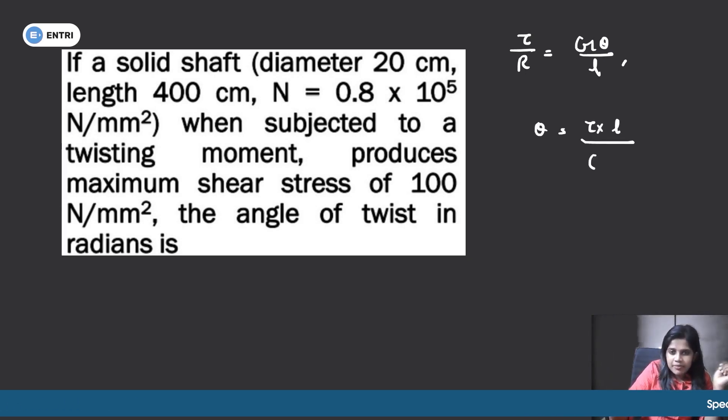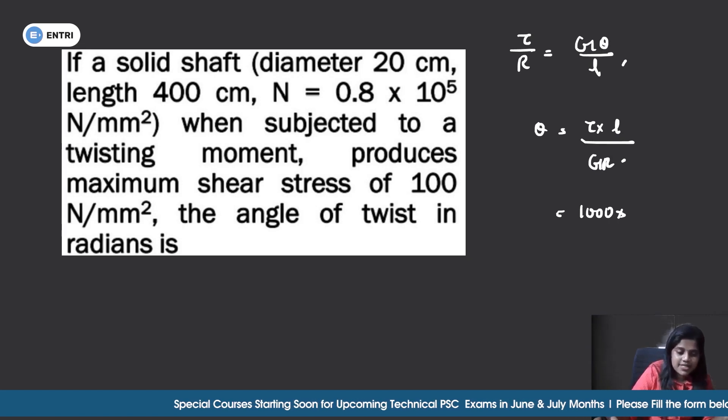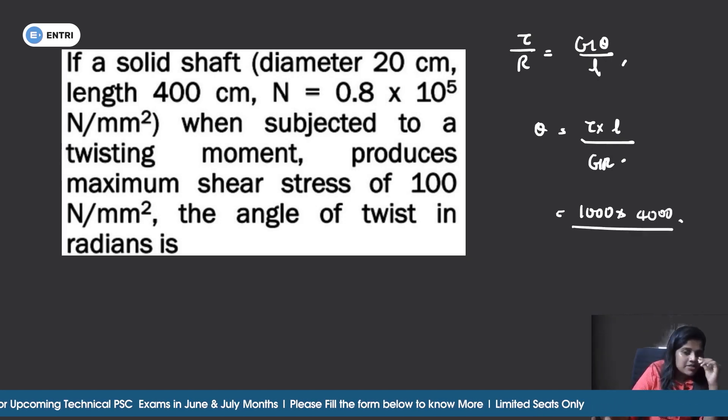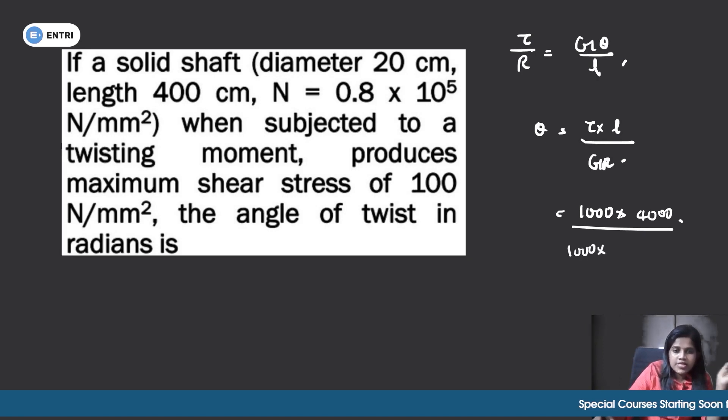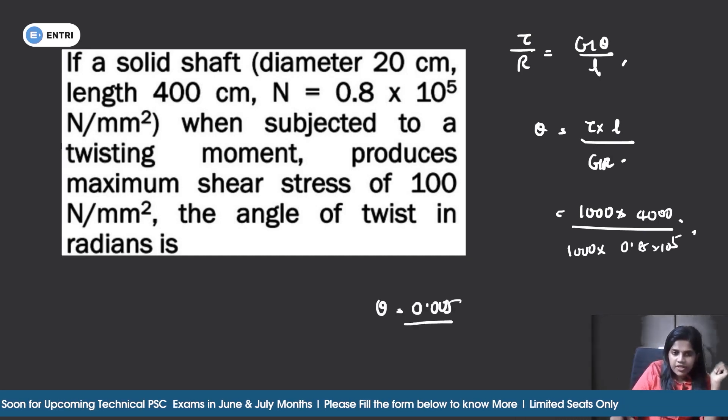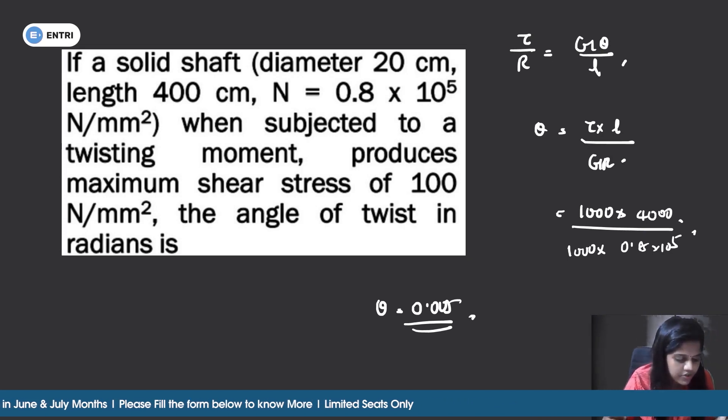Theta is equal to Tau into L divided by G into R. This is our relationship. Tau produces maximum shear stress of 100 into length, the length is 400 centimeters, so 4000 mm divided by G value. Solid shaft, shear modulus G is equal to N. So 100 into 4000 divided by (0.8 into 10 raised to 5) into 100. If we solve it, we will get theta is equal to 0.05 radians. Option C is 0.05. Option C.